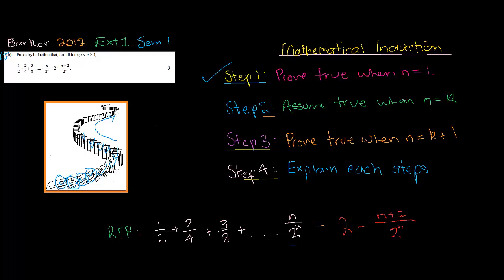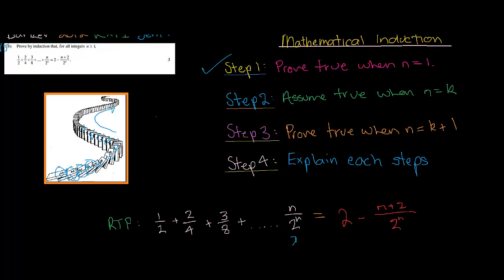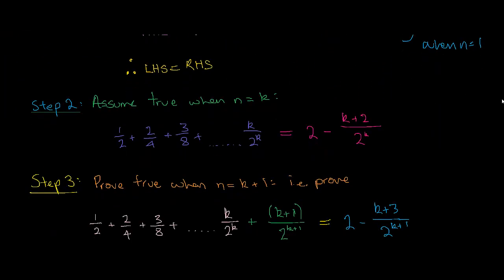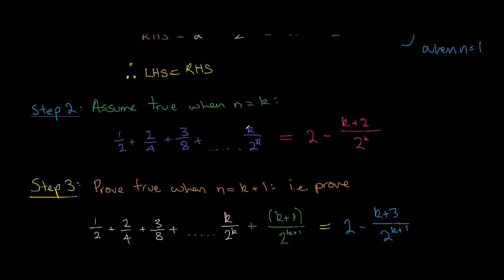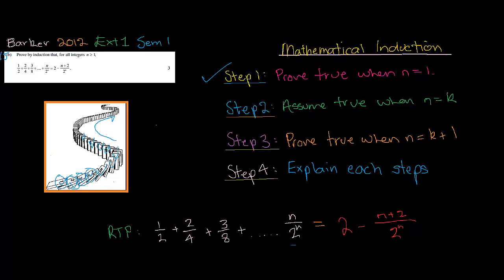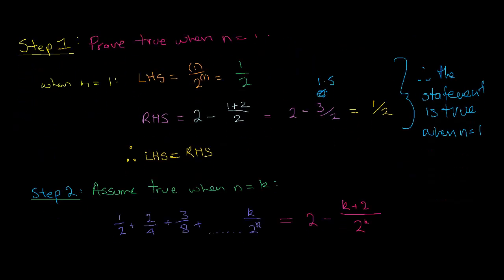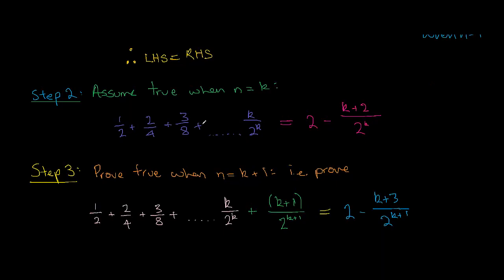Step 2: we just assume it's true when n equals k. This step is really easy — where there used to be n's, we just put a k in. So this is exactly what we had from the question, except wherever we had an n, we've put a k. So this is just an assumption we've made, putting n equal to k.